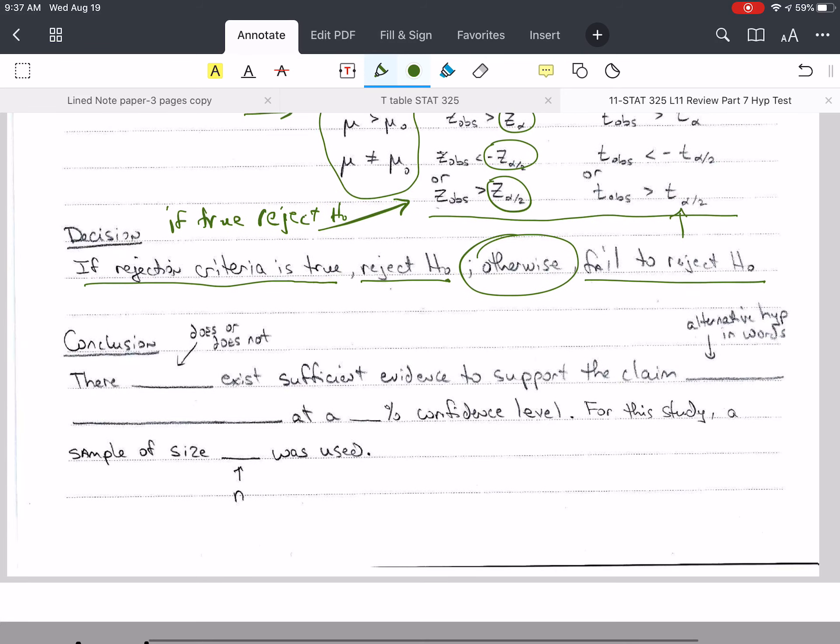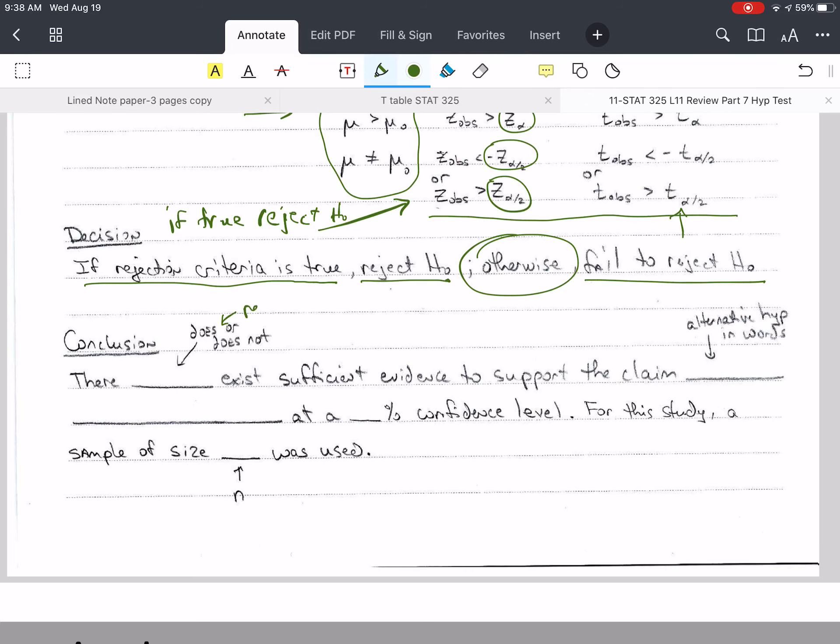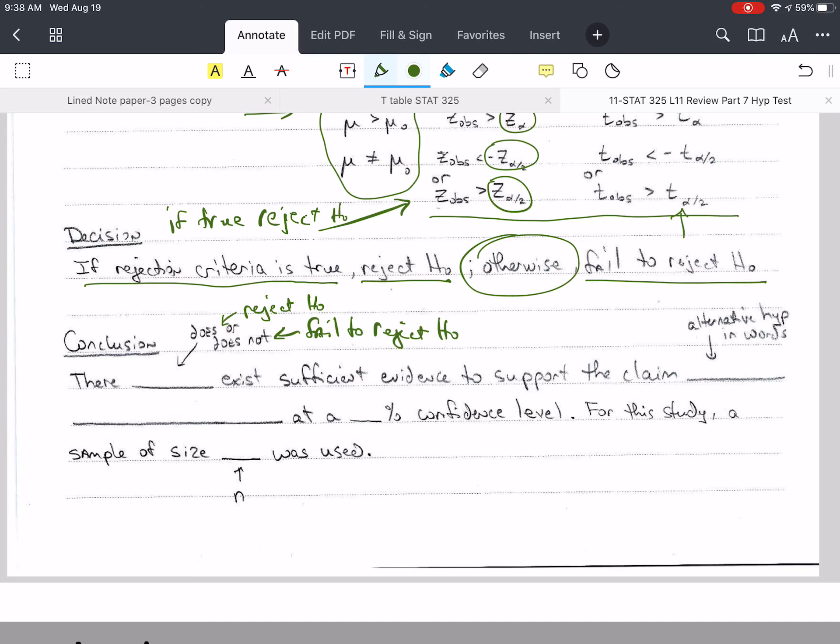And then when we're done, we need to put this in terms that laymen or non-technical people can understand. And so here is the way of saying that so that you're always correct. There does or does not exist sufficient evidence to support the claim. So if we reject, does is reject H-naught. Does not is fail to reject. The claim is the alternative hypothesis. This is H-1 written in words.